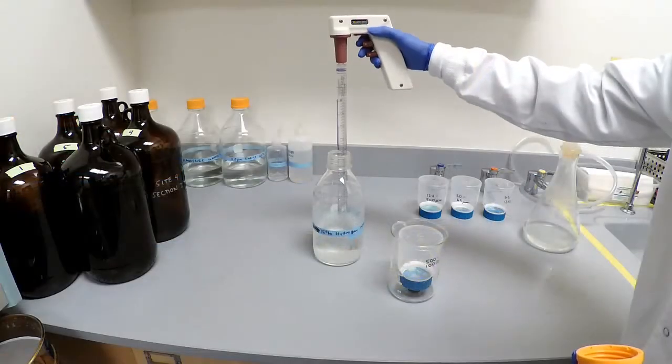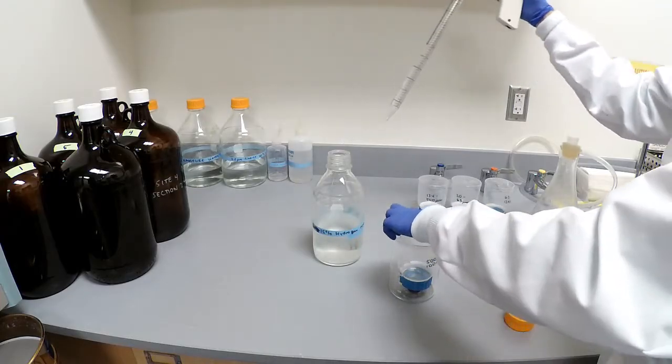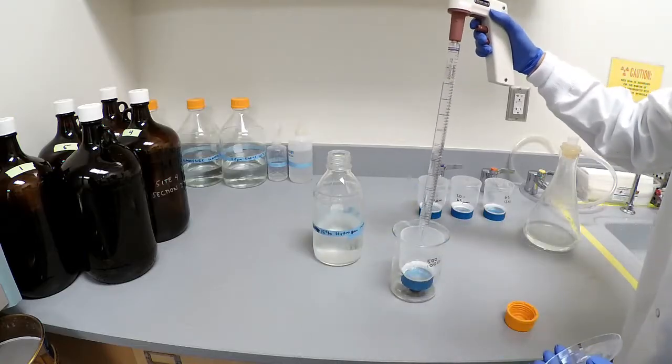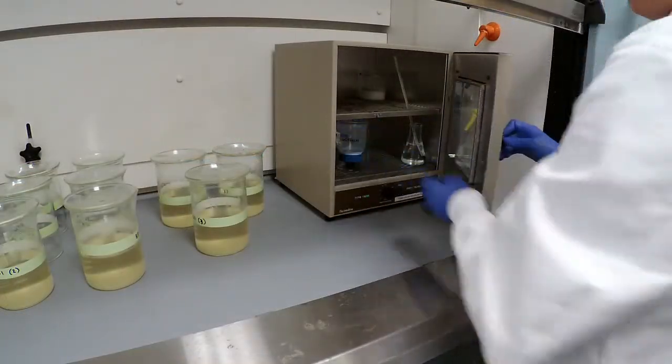Add 30 ml of 15% hydrogen peroxide to the filtering unit. Place the beaker in an incubator for 16 hours at 50 degrees Celsius.